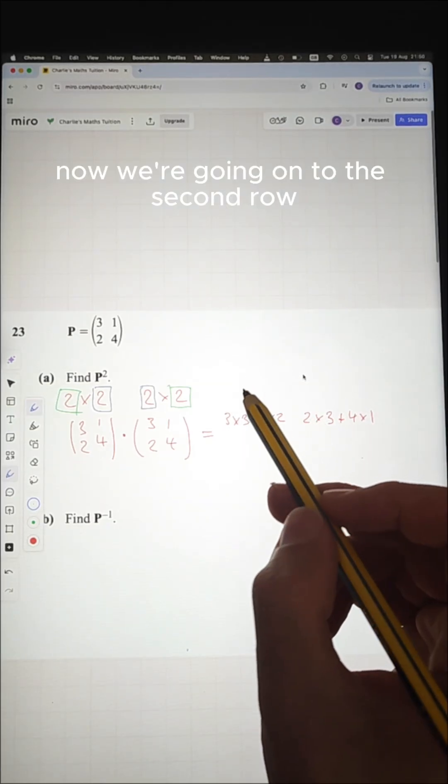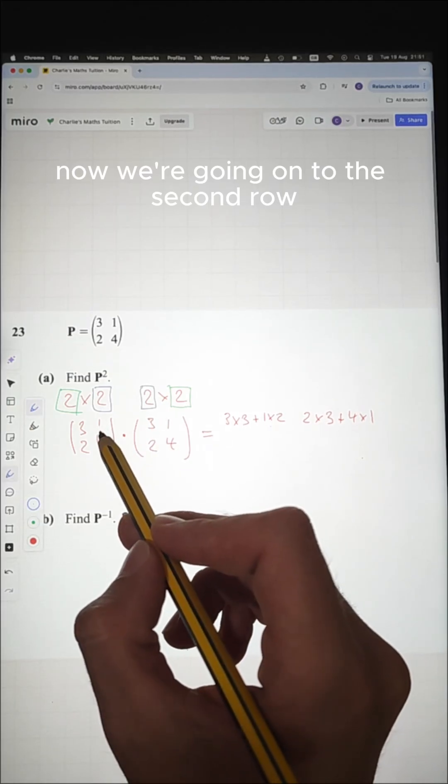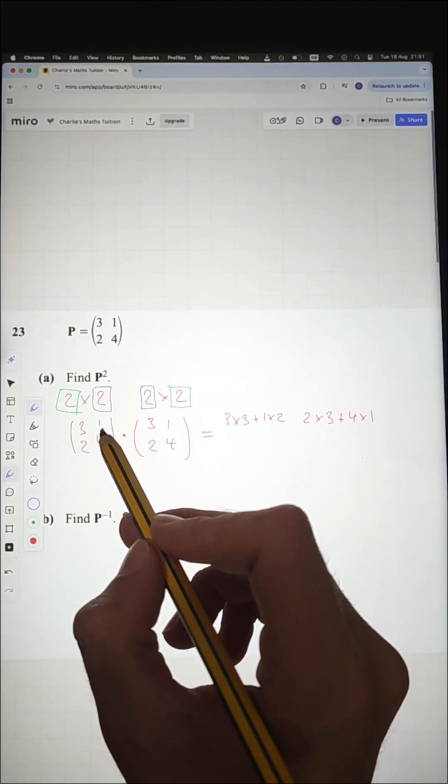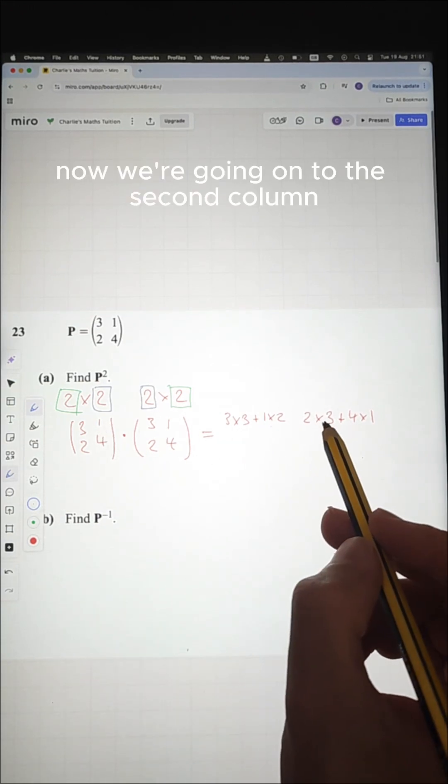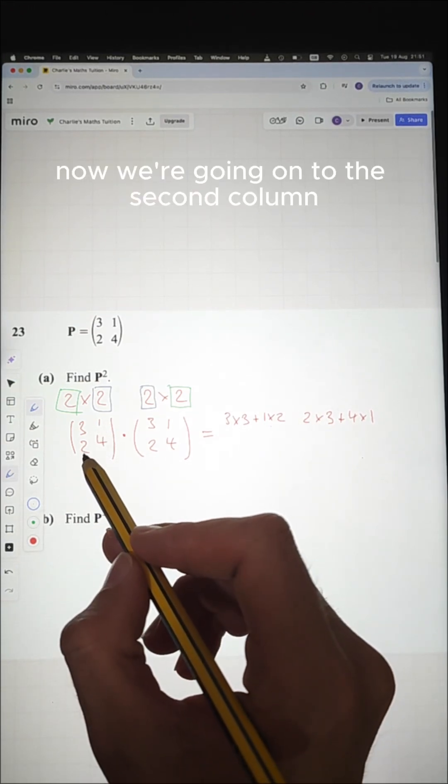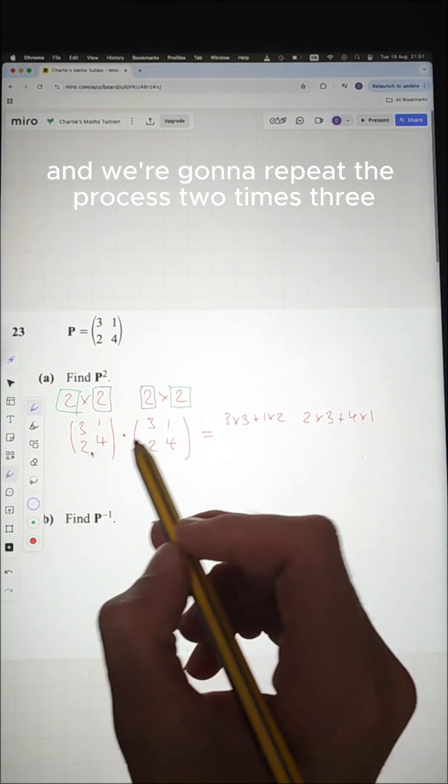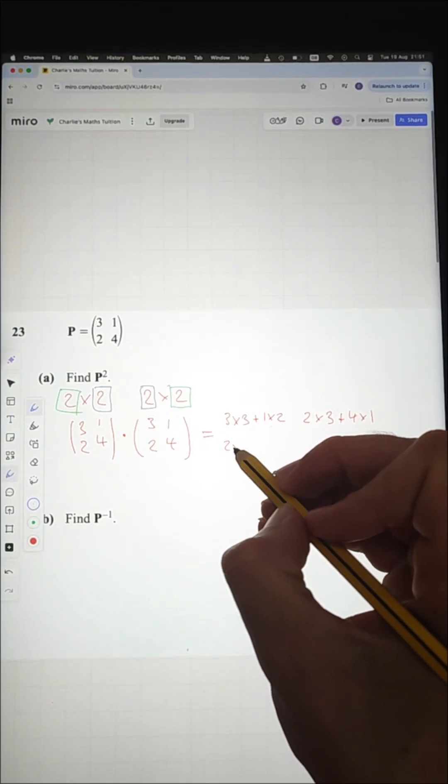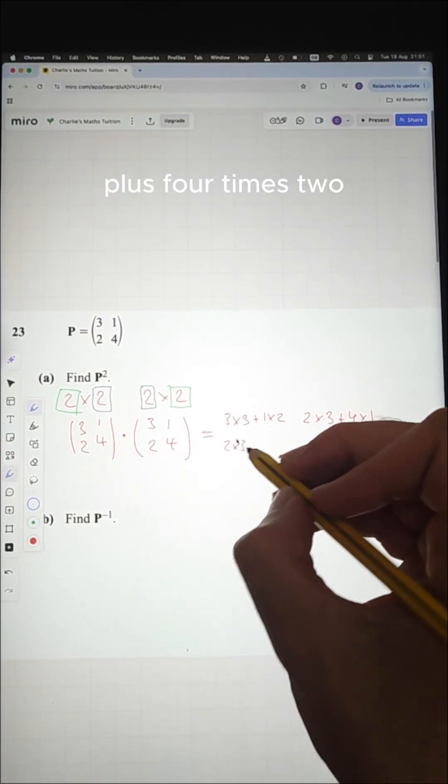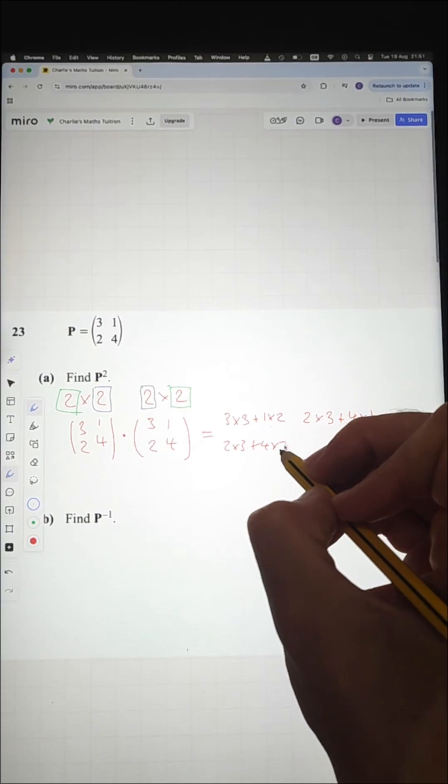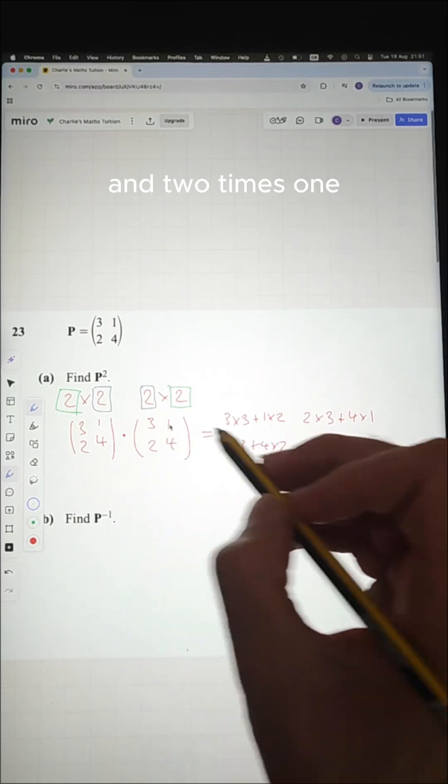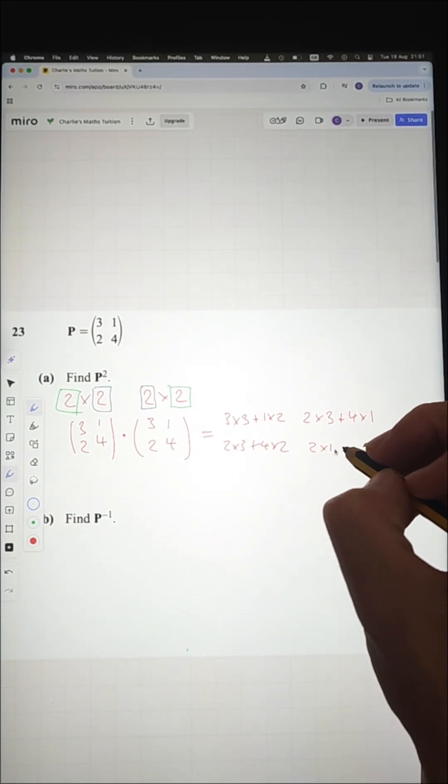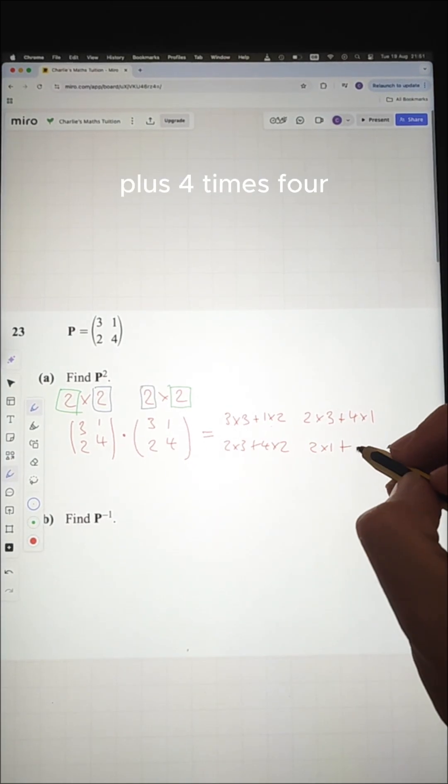Now we're going on to the second row. Now we're going on to the second column and we're going to repeat the process. Two times three, three plus four times two. And two times one. Plus four times four.